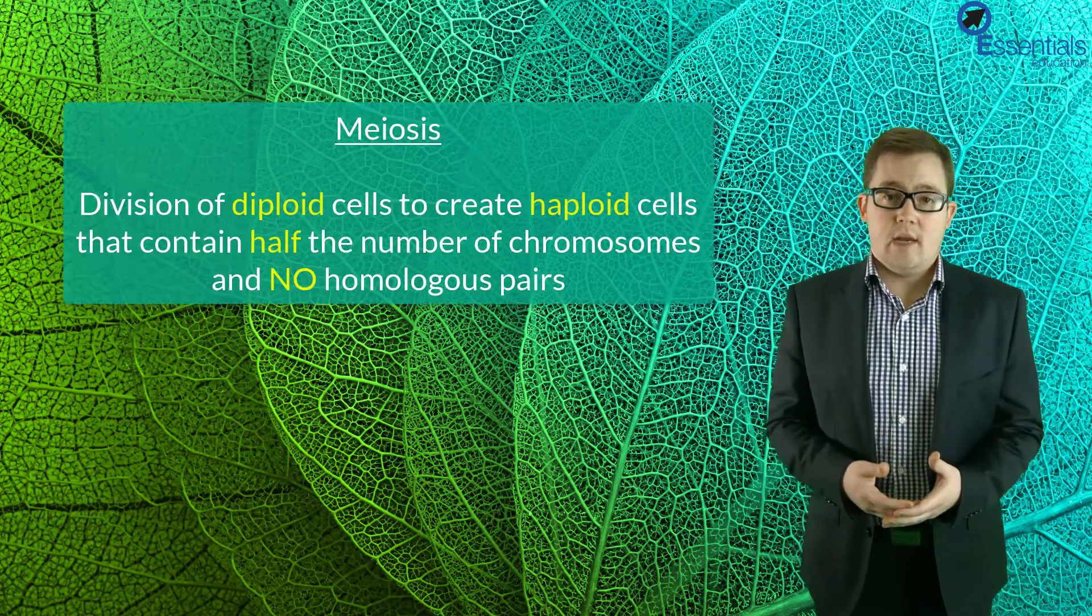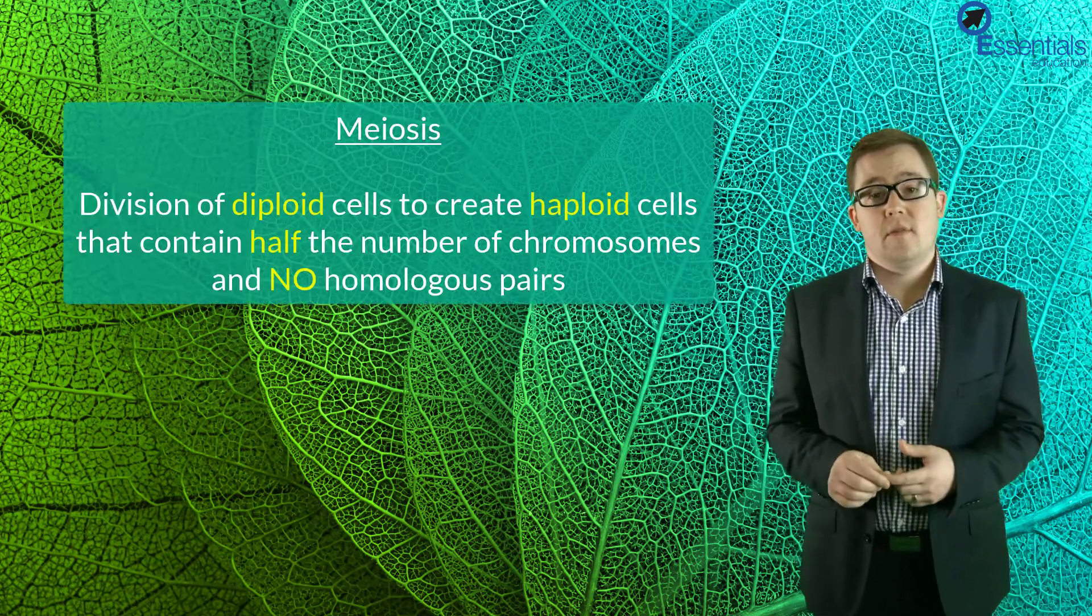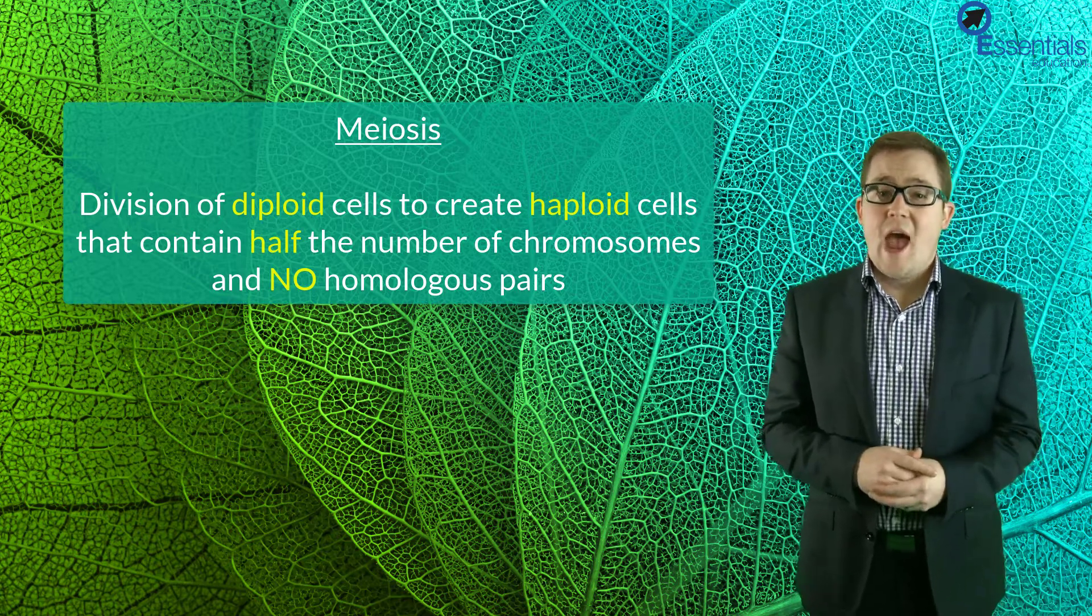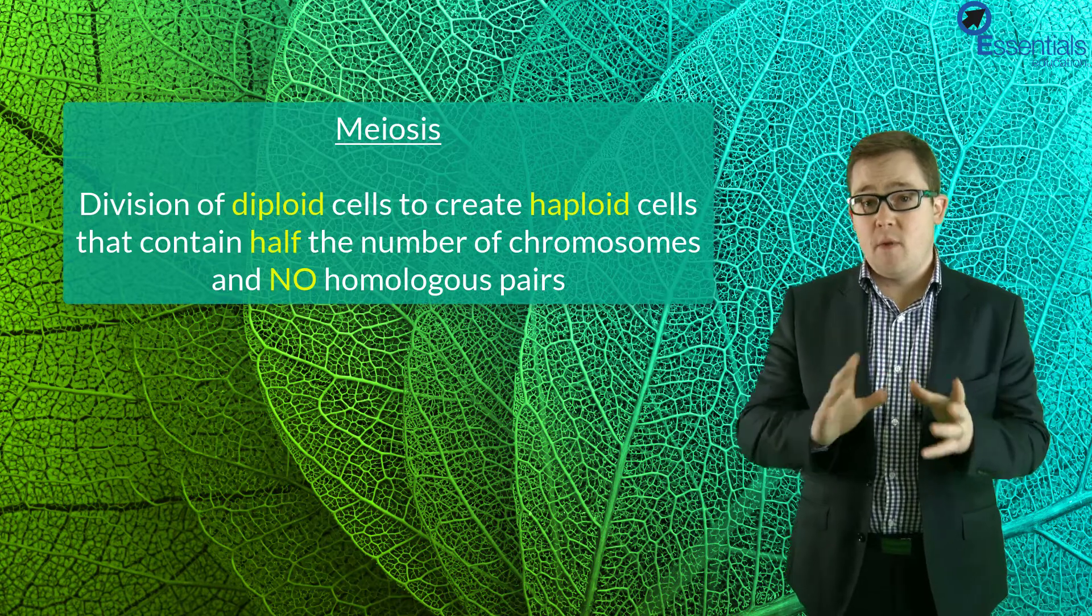And it is the combination of these two alleles which determine the child's eye colour. Now in meiosis, we will actually be separating the homologous chromosomes when we half the amount of DNA. So we can now say that the process of meiosis is the division of diploid cells to produce haploid cells that contain half the number of chromosomes and only one member of each pair of homologous chromosomes.